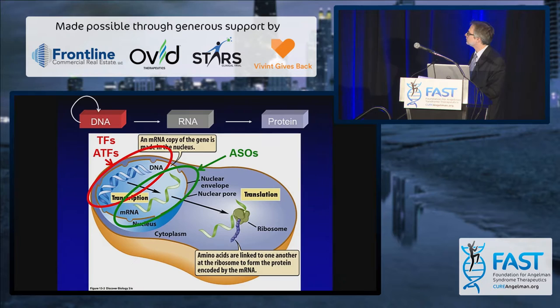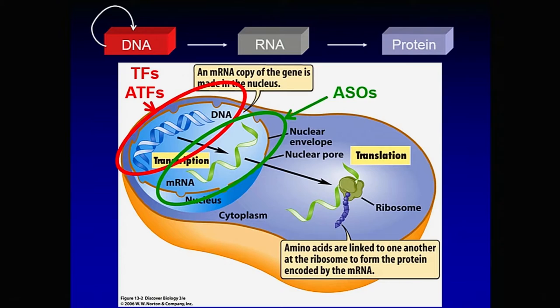Natural transcription factors or artificial transcription factors work on the DNA level. Antisense oligonucleotides work on the RNA level. You can imagine working at the protein level as well.